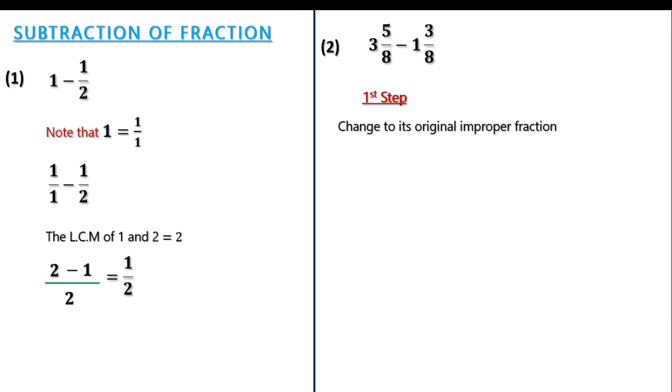We do that by multiplying the whole number by the denominator, which is 8. For example, in the first fraction, we multiply 8 multiplied by 3, which gives us 24. Then 24 will be added to the numerator, which is 5. So 24 plus 5 will give us 29. That is why we have 29 over 8 in the first fraction.